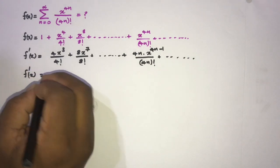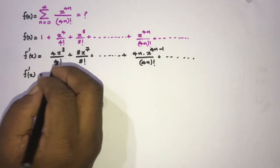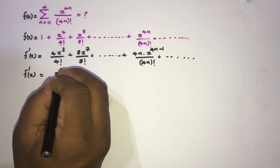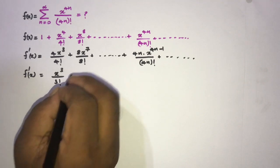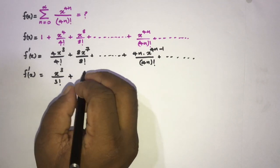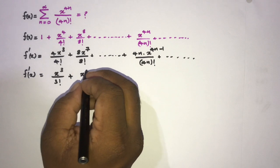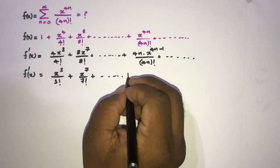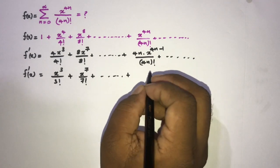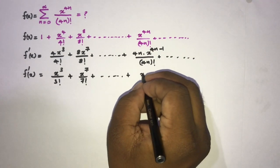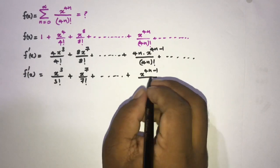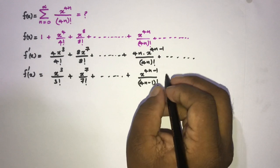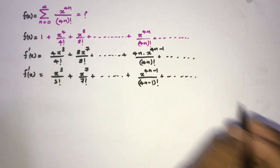Then we can simplify: f prime of x equals — here we have 4 over 4 factorial, so the 4 gets cancelled — and we have x to the third power over 3 factorial, plus x to the seventh power over 7 factorial, plus x to the 4n minus 1 over 4n minus 1 factorial, plus so on.